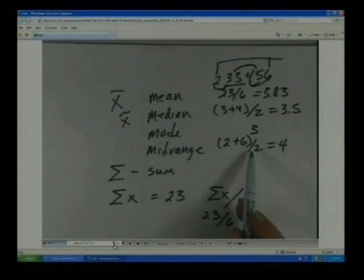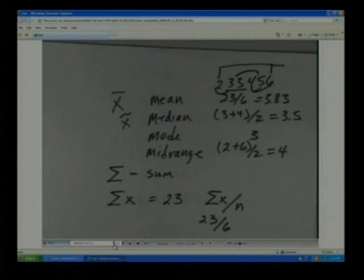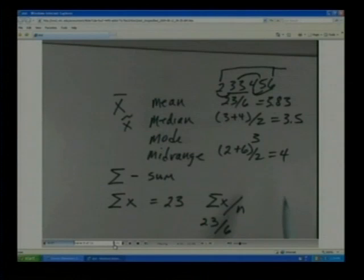So you can see the average can be anywhere from 3 to 3.5 to 3.83 to 4, depending on what definition you use for the average.